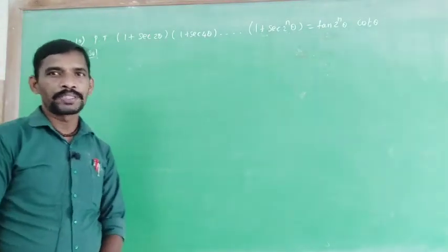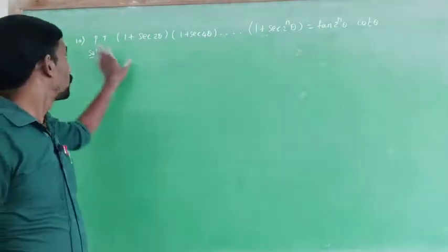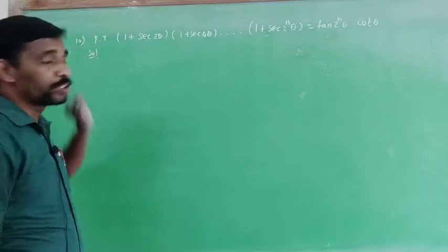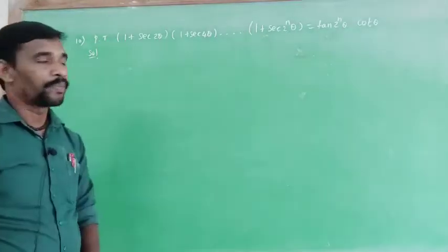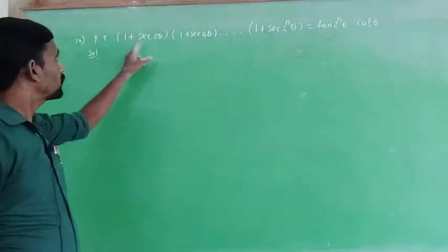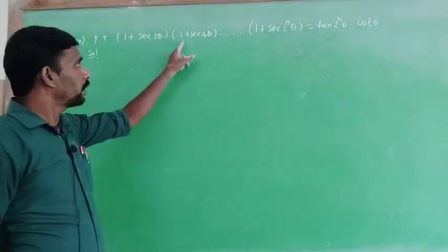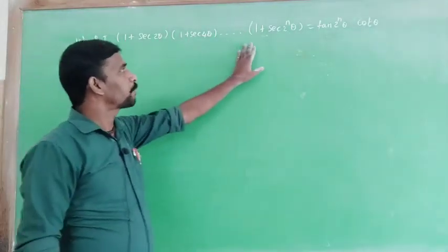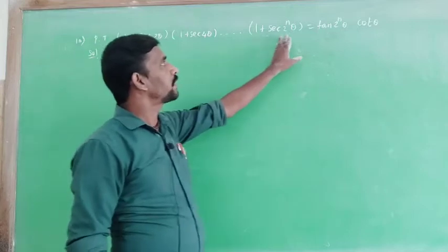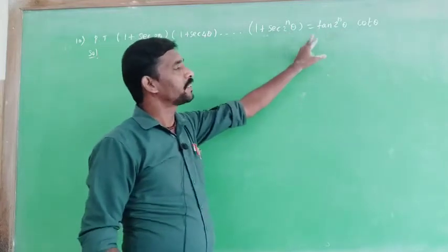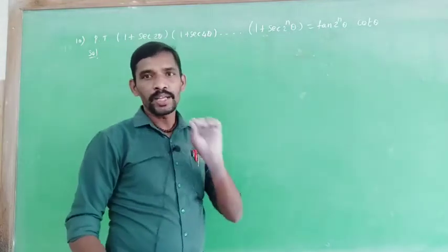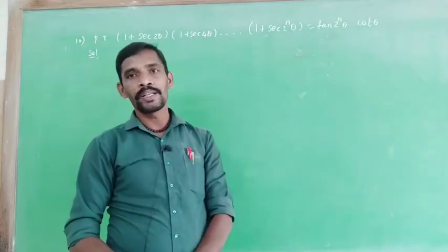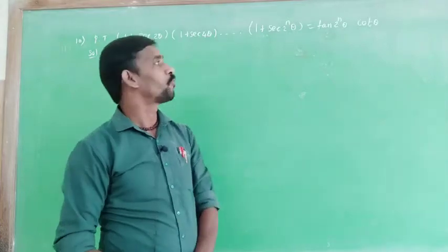Hi students, welcome to my channel. This is Exercise 3.5, question number 10. We need to prove that (1 + sec 2θ)(1 + sec 4θ)... up to (1 + sec 2^n θ) equals tan(2^n θ)·cot θ.